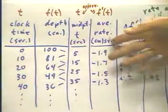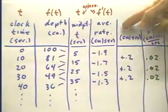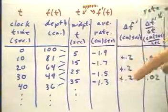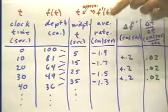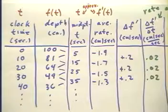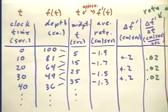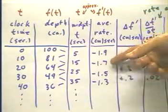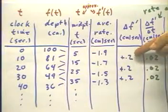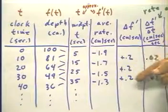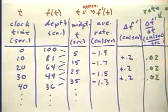To find the rate at which this rate changes, we take the change in the f prime values. Remember, this column gives us f prime values. So we take the change in f prime, which is the change in the rate, or the change in the number of centimeters per second at which the surface of the water seems to be moving. And we find that those changes, well, from negative 1.9 centimeters per second to negative 1.7 is an increase of 0.2 centimeters per second. And then similarly we have the same increases over the next two time intervals.